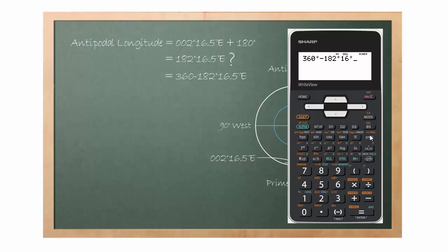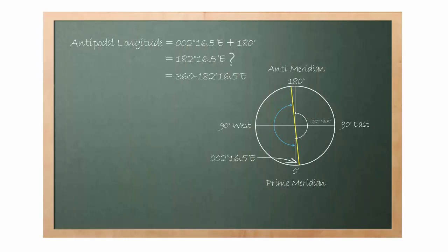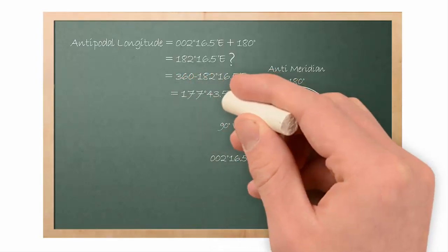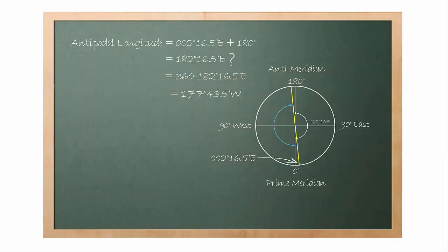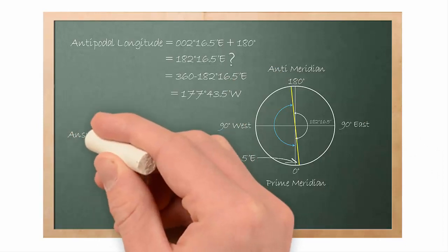360 degree minus 182 degree, 16 minute, 30 second equal to 177 degree, 43.5 minute. Because the antipodal position lies within the western hemisphere, the answer will be 177 degree, 43.5 minute west.